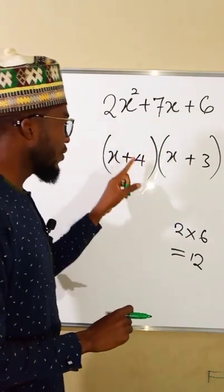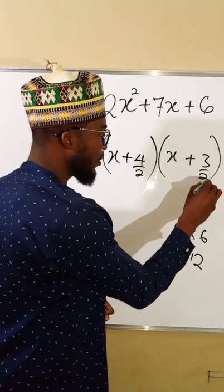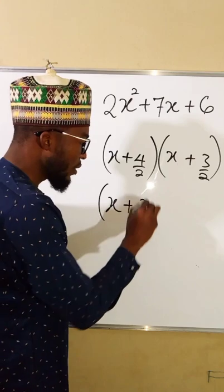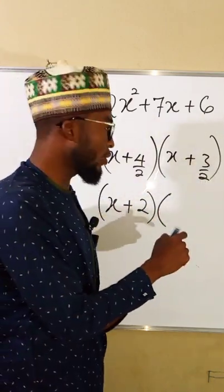Now use this 2 to divide these numbers. Divide by 2, divide by 2. This becomes x plus 4 divided by 2 is 2, but 3 cannot divide 2 without remainder.